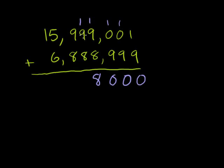1 plus 9 is 10, plus 8 is 18 - write the 8, carry the 1. 1 plus 9 is 10, plus 8 is 18 - write the 8, carry the 1. Now we're in the millions place. 1 million plus 5 million is 6 million, plus 6 million is 12 million. Write the 2 million and then carry the 1, because 12 million is 2 million plus 10 million. This is one 10 million plus another one 10 million - 1 plus 1 is 2.